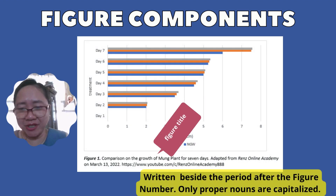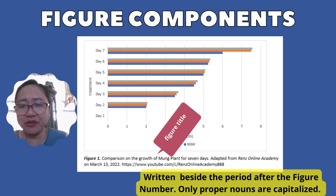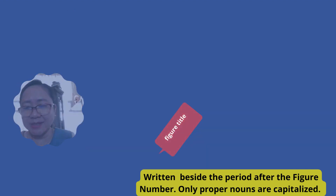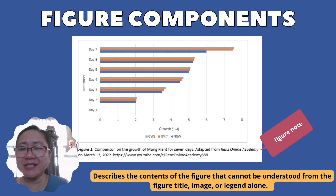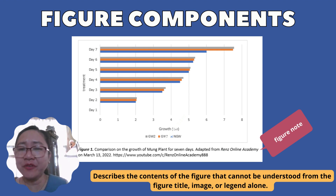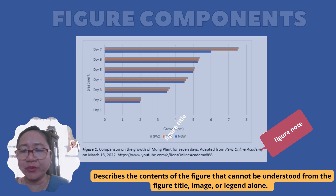Next is the figure title. The figure title is written beside the period after the figure number, and only the proper nouns are capitalized. Beside the figure title is the figure note, which describes the contents of the figure that cannot be understood from the figure title, image, or legend alone.